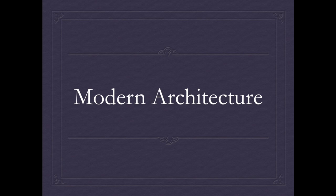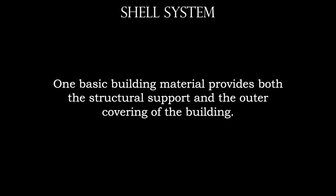Our lecture today is going to be on modern architecture. And before we jump into modern architecture, we need to see how ancient architecture was first created, which is using the shell system. This means that there's one basic building material that provides both the structural support and the outer covering of the building.